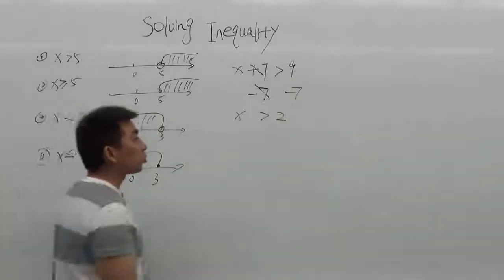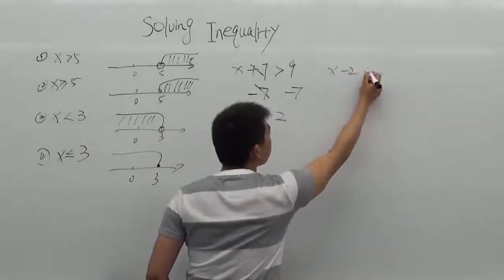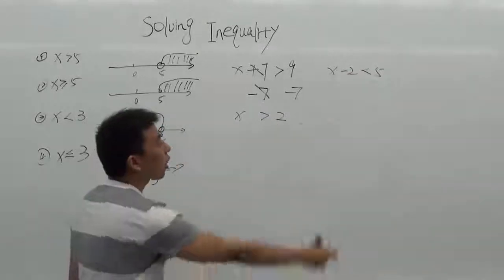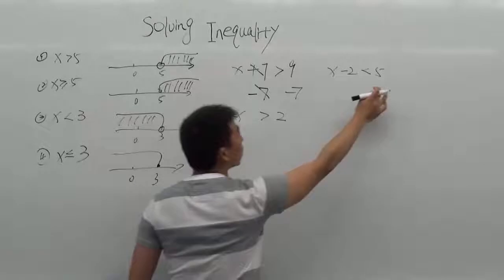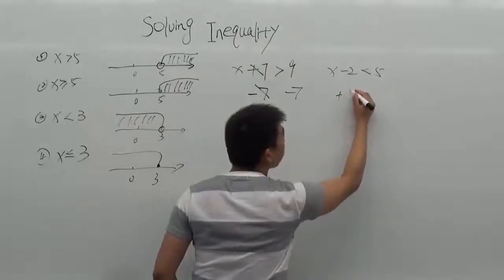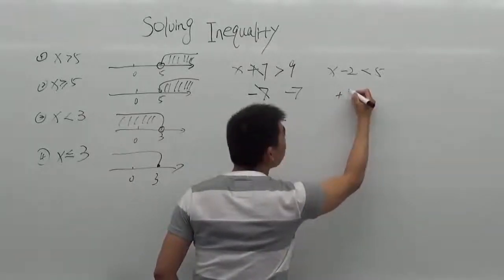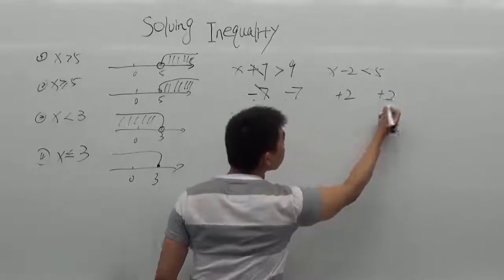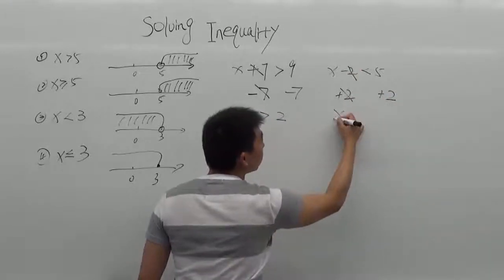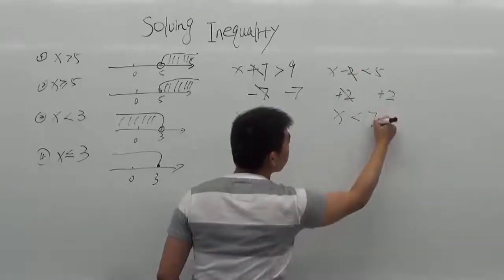Same with subtraction: x minus 2 less than 5, for example. Here there is subtraction, so we do the addition — add 2 to both sides. The 2s cancel out, then x less than 5 plus 2, which gives us 7. So x less than 7.